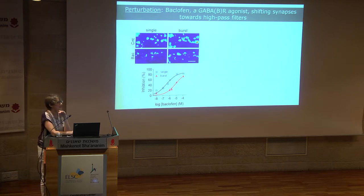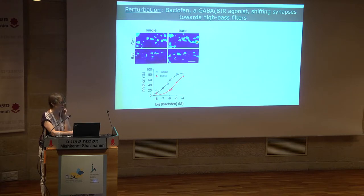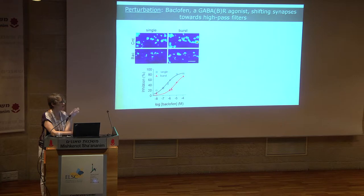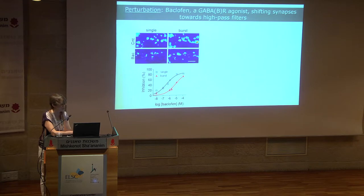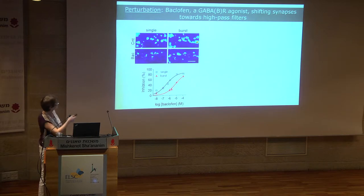First I would like to present the perturbation we used. At the point when we started the project, it was just a random selection — there is nothing special about GABA-B receptors except that they are widely distributed in all neurons, both excitatory and inhibitory, in almost any brain region. The effects of GABA-B receptor agonists are also extremely robust.